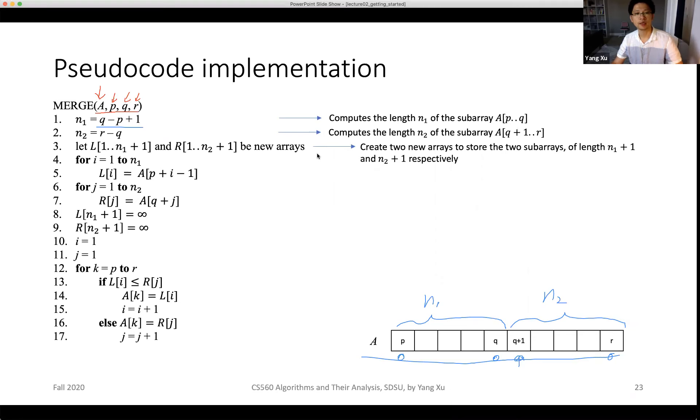Then the third line creates two new arrays which have plus one of the length of the two sub-arrays. We call the first new sub-array L, which stands for left, and the second is called R, which is for right. They both have n1 plus 1 and n2 plus 1 empty elements in it. These are two new arrays with nothing in them.